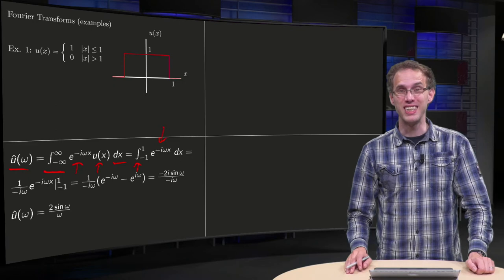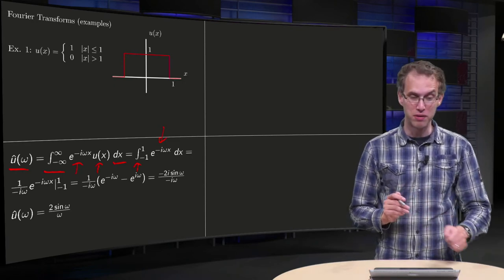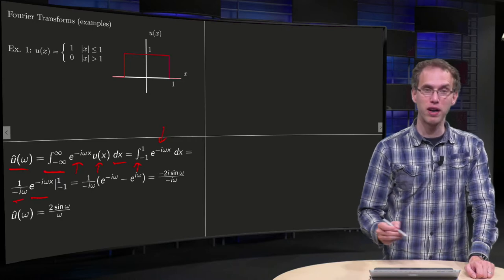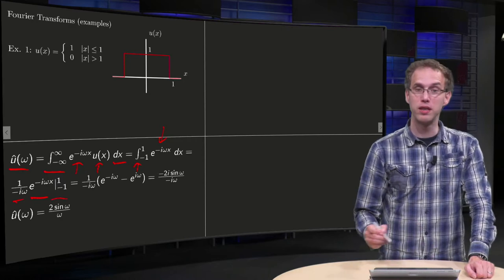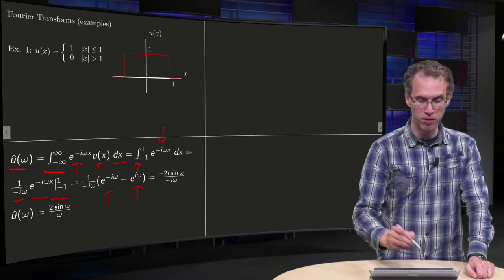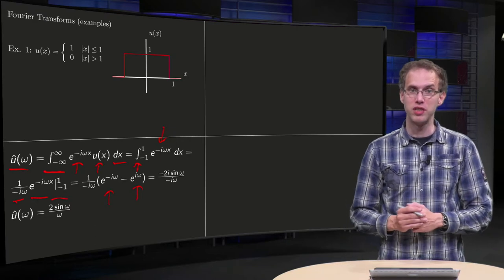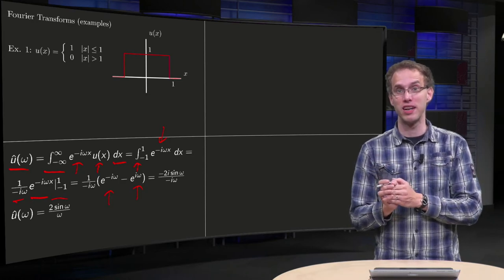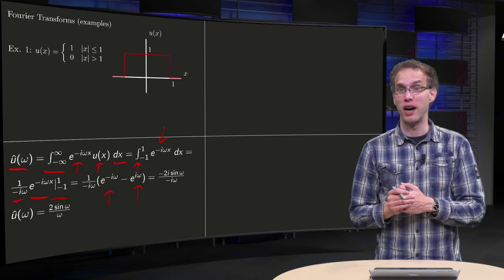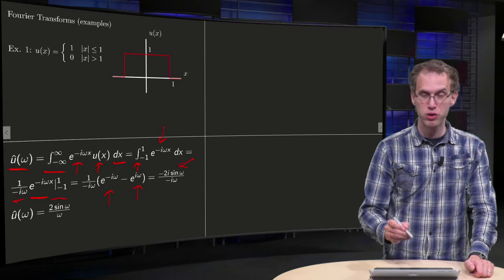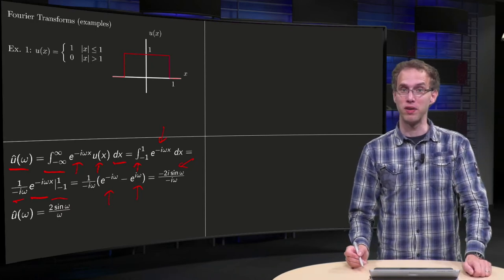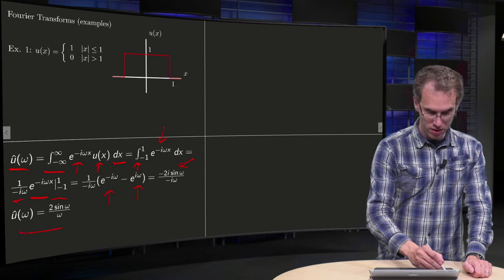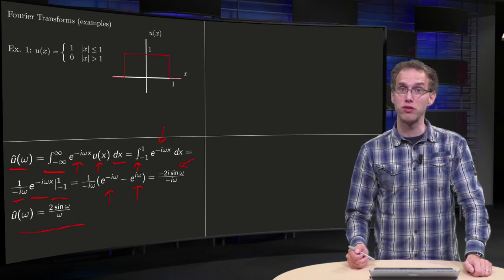The problem is often to do this integration, but in this case we can, because we know the antiderivative of e to the power minus iωx with respect to x is e to the power minus iωx divided by minus iω. We plug in the boundaries 1 and minus 1 — upper minus lower — and we observe that we have a minus sign and then e to the power iω minus e to the power minus iω, which is exactly 2i times sin(ω). So in the numerator we have 2i·sin(ω) times minus 1, the minus i cancels out, and we are left with 2sin(ω)/ω — that is our Fourier transform of this first function.